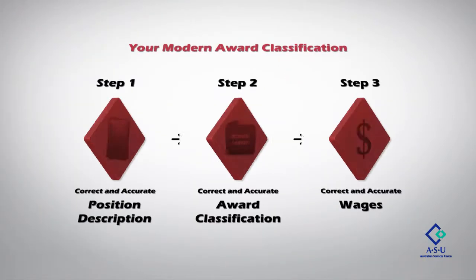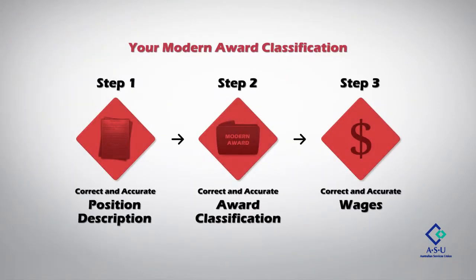Here we are at step three: equal pay. This video will show you how to work out your wages under the Equal Remuneration Order, or ERO. You'll need to know your modern award classification level before we start. Working this out is covered in video two.